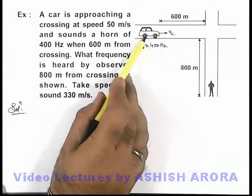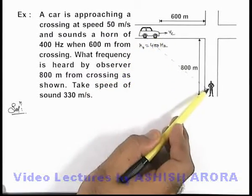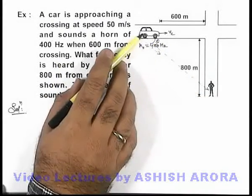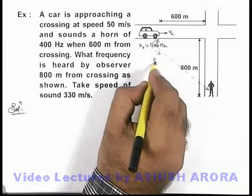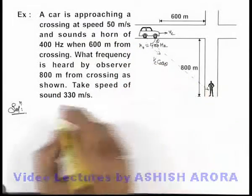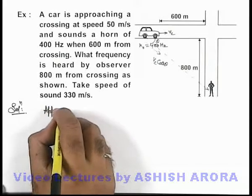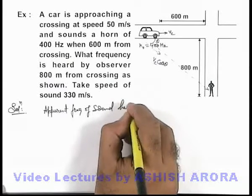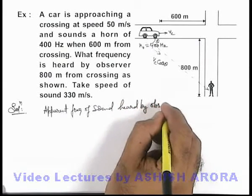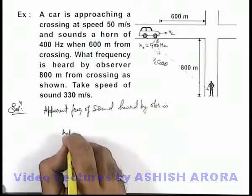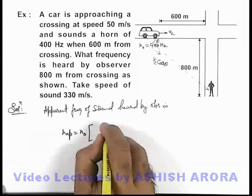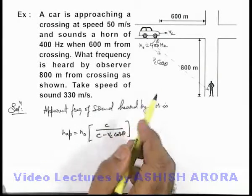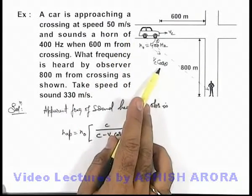When the car is producing sound, the sound will be travelling in the direction of the observer. If this angle is theta, we can consider that the approach speed of the source of sound towards the observer will be v_c·cos θ. So in this situation we can write the apparent frequency as n-naught multiplied by c divided by (c minus v_c·cos θ), because the source is approaching with speed v_c·cos θ.